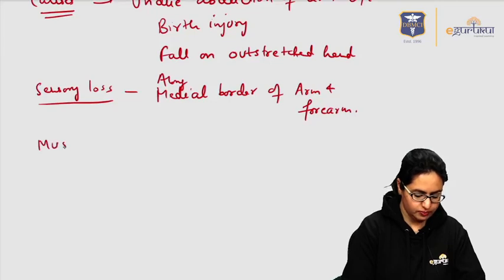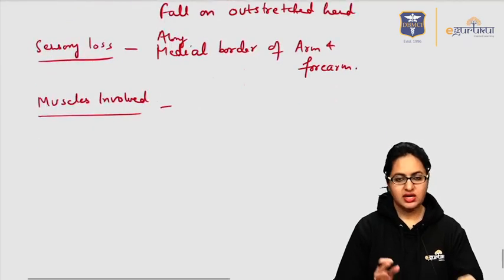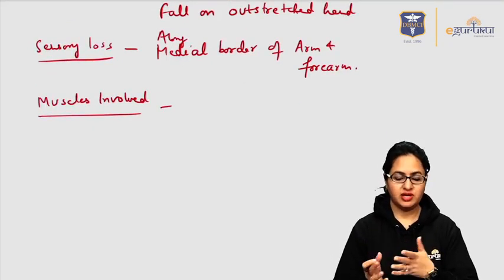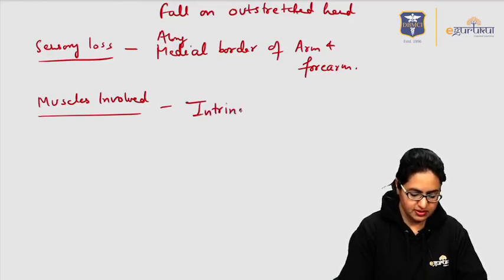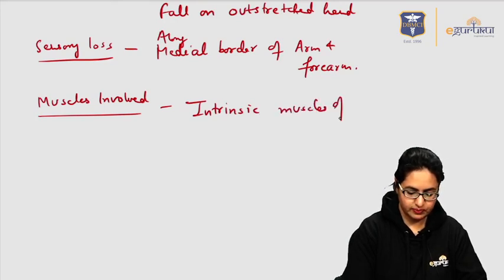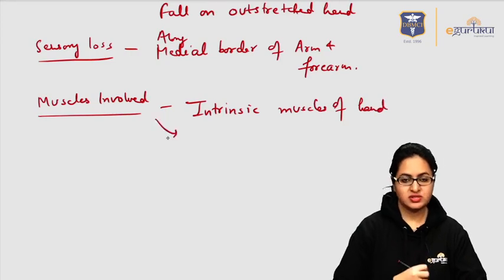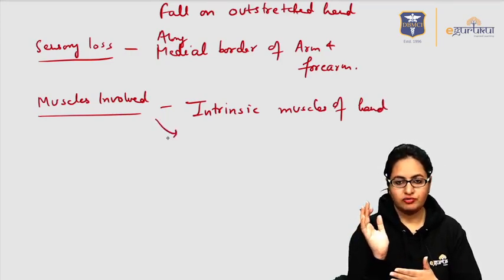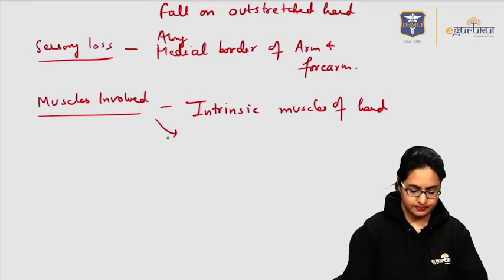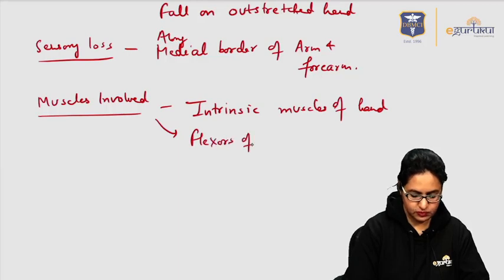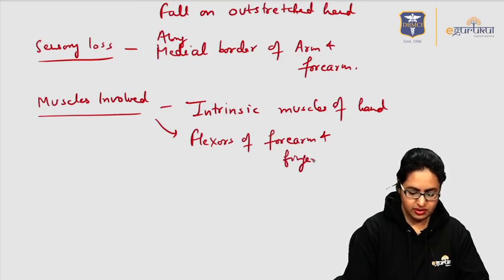When we talk about the motor loss, the muscles which are involved in Klumpke's palsy are the intrinsic muscles of the hand, which are mainly supplied by C8 and T1 nerve roots. Apart from this, it also involves the flexors of the forearm, or the flexors of the wrist and the fingers.